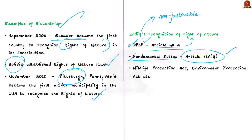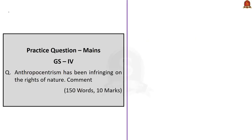India has other masterpiece legislations worth acknowledging in this regard, including the Wildlife Protection Act and the Environmental Protection Act, which safeguard these species. In this discussion, we saw about the Great Indian Bustard, the threats to the species, and the difference between biocentrism and anthropocentrism. Now let us move on to the next discussion.